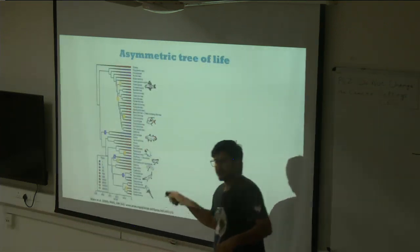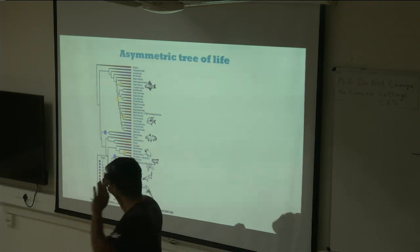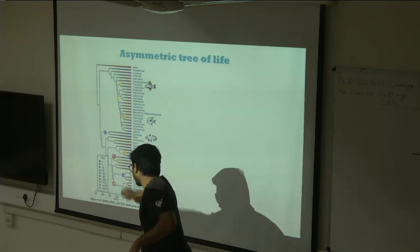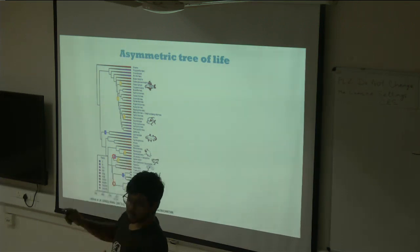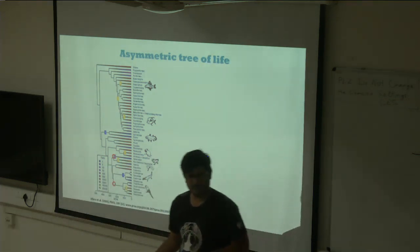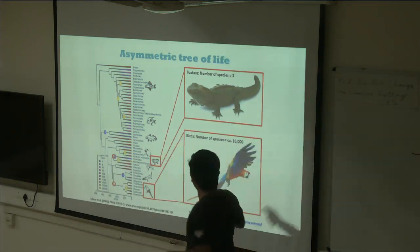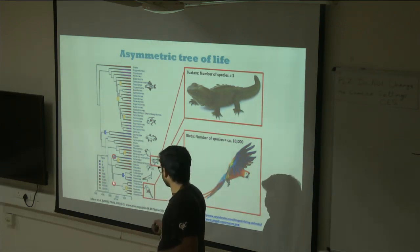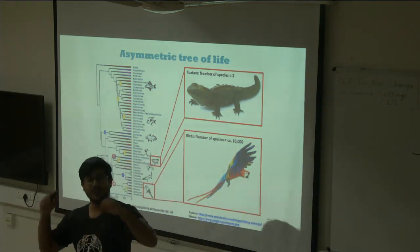When you look at the tree of life, the main thing you'll notice is that it is highly asymmetrical in terms of species numbers. For instance, one circle leads to the tuatara, a lizard-like reptile found in New Zealand, and the lower circle leads to birds. There's only one species of tuatara but more than 10,000 species of birds, even though both originated approximately 250 million years ago.